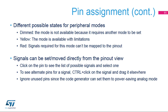Signals can be set and moved directly from the pinout view. Click on the pin to display the list of possible signals and select one. This works for GPIOs which have no peripherals assigned. To see alternate pins for a signal, Ctrl-click on the signal. You can then drag and drop the signal to the new pin while holding the Ctrl key. It is not necessary to manually set all unused pins to analog; there is a semi-automated step that does this.